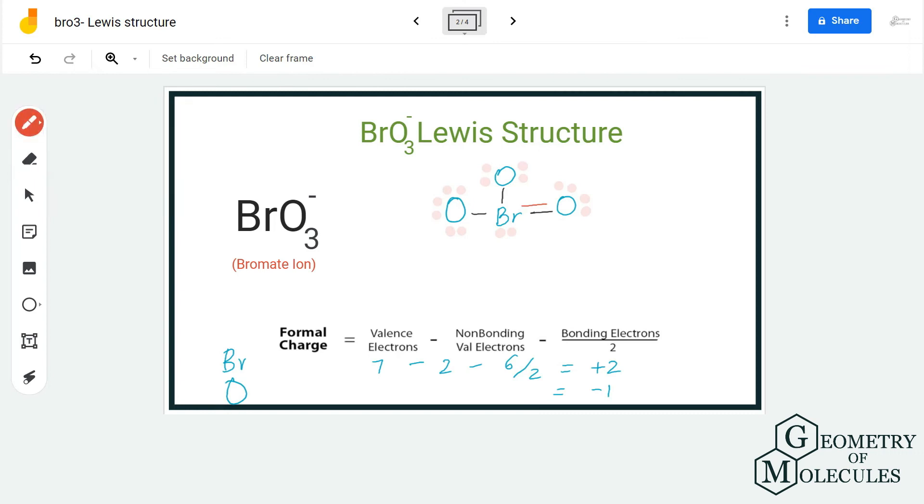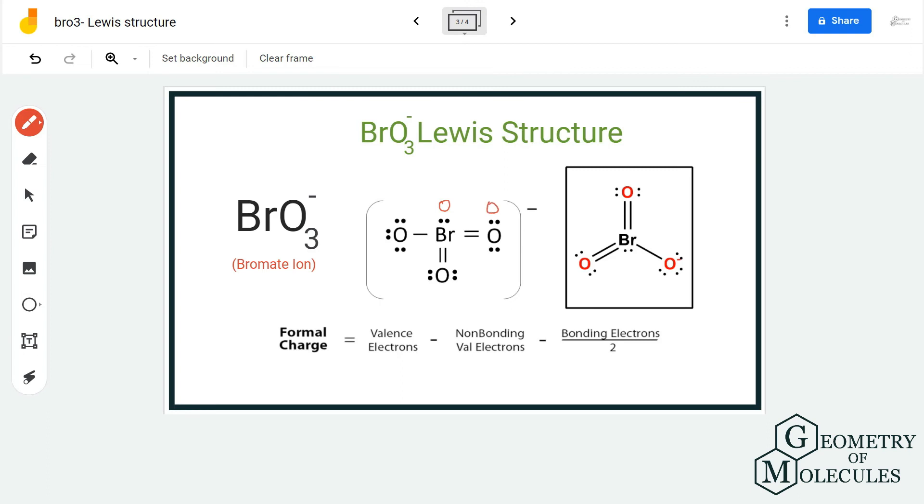All these atoms will have zero charge, which means this is the most accepted Lewis structure for BrO3-. As it's an ion, we have to put brackets and mention the charge on the molecule.